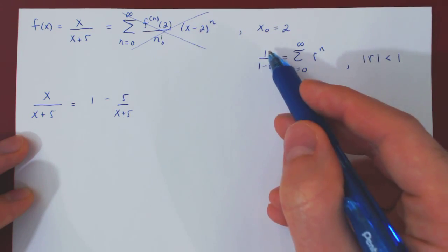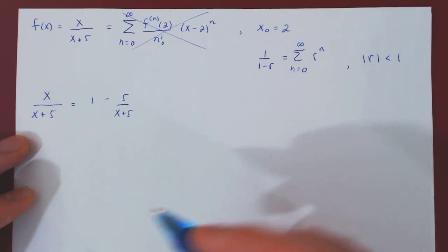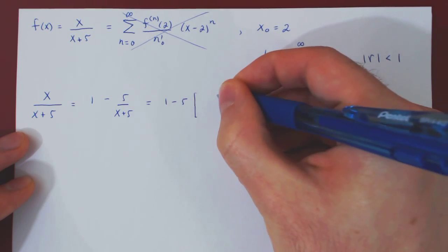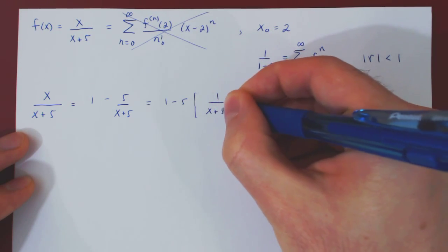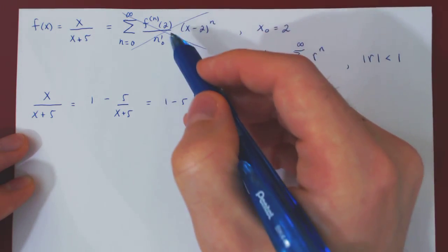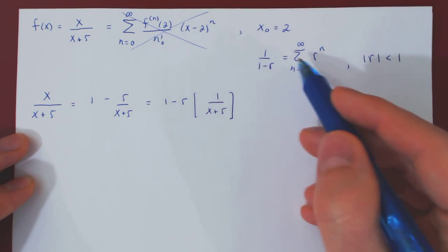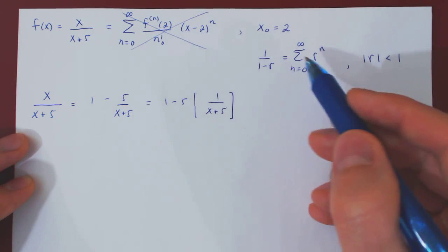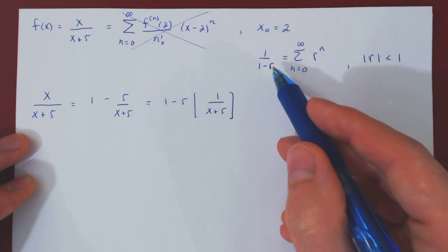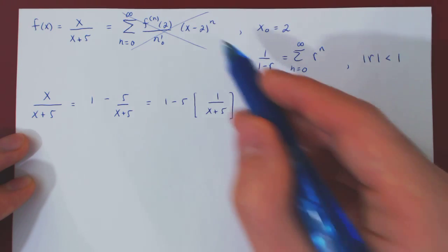We want to transform this into 1 over 1 minus r. On the numerator, we need to have a 1, so let's factor the 5. This will become 1 minus 5 times 1 over x plus 5. Now, the key thing here is because we want a Taylor series centered at 2, the x minus 2 to the n will be coming from the r. So we need r to be something with an x minus 2, meaning we need to transform this into 1 over 1 minus the term with an x minus 2 in there.